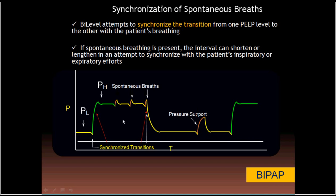Another important point: if the patient is apneic or paralyzed, you set a rate and the cycling will be started not by triggering but by time. If you set the high CPAP duration and a frequency of 15, this will cycle 15 times per minute. The difference between the low and high CPAP is responsible for delivering the tidal volume. If the patient starts to breathe spontaneously, he can take breaths at either the high or low level and will be assisted accordingly.